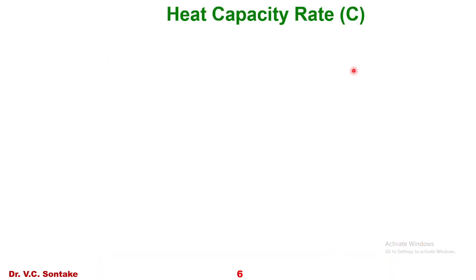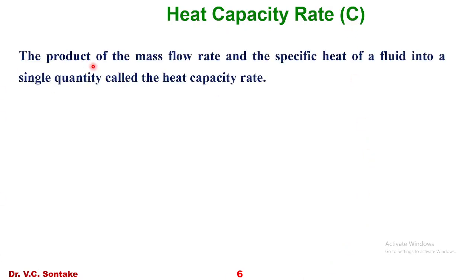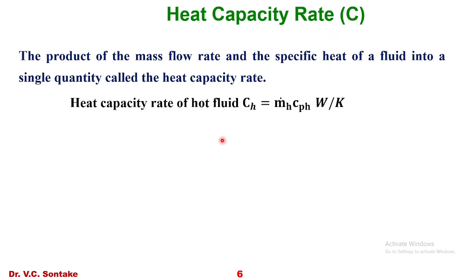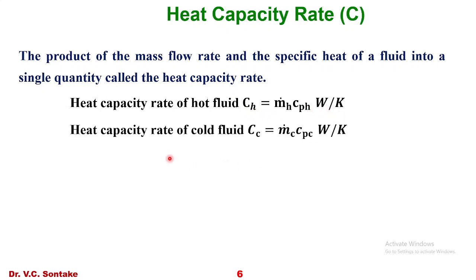The product of the mass flow rate and the specific heat of a fluid is combined into a single quantity called the heat capacity rate, represented by capital C. The heat capacity rate of the hot fluid, C_H = Ṁ_H · C_PH, and the heat capacity rate of the cold fluid, C_C = Ṁ_C · C_PC, both in Watts per Kelvin.